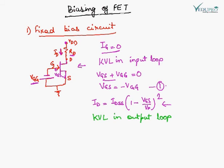Now applying KVL in the output loop. Once ID is known and VGS is known, apply KVL in the output loop. Output loop: VDD minus ID RD equals VDS. So here, the value of ID and VDS will give me the operating point of the circuit.